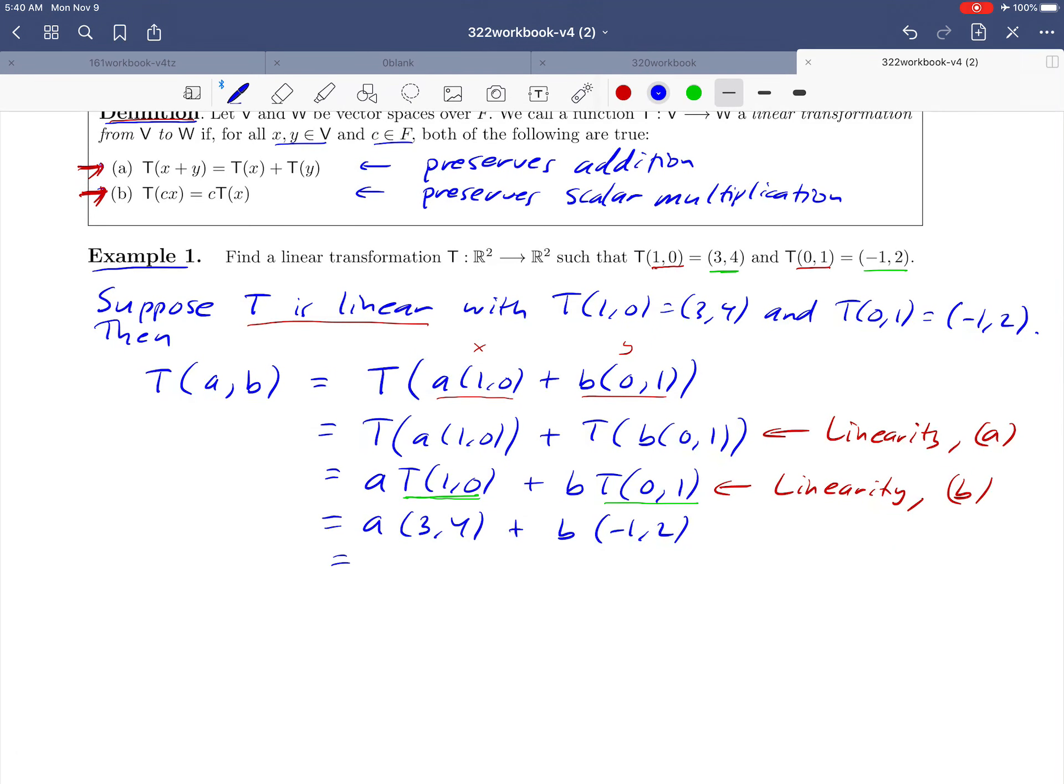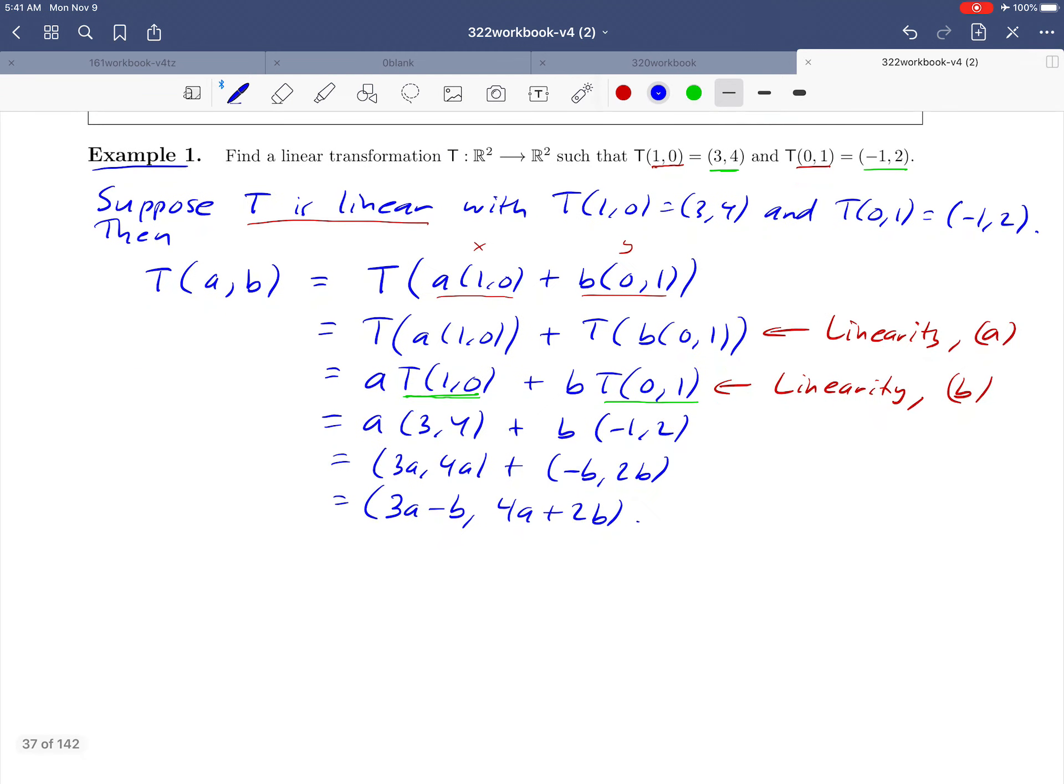And the last step here would be just to do the algebra on the right-hand side. To multiply the a and the b through, let's do that. We'll get (3a, 4a) plus (-b, 2b). And one last step, we could go ahead and add those ordered pairs together. That's going to give us (3a - b, 4a + 2b). So that's actually our answer here. We came up with a formula for T of (a, b).